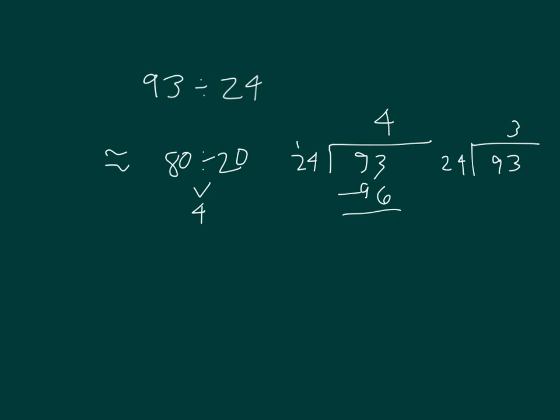3 times 24. 3 times 4 is 12. 2, we group a 1. 3 times 2 is 6. Plus 1 is 7. So, our remainder is 21. So our answer is 3 with the remainder of 21. And we should do our check.